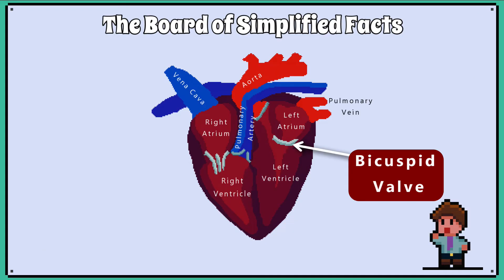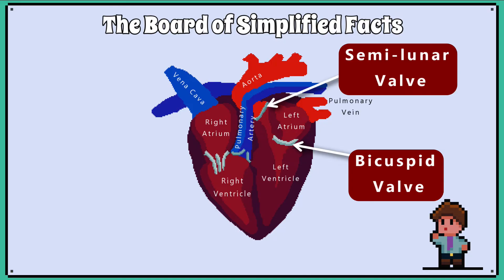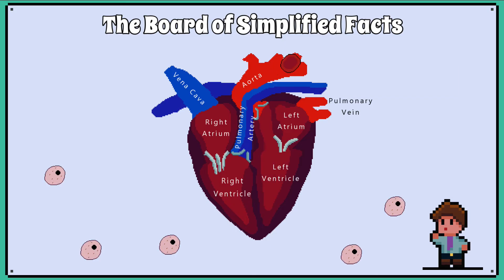When the left ventricle contracts, the blood cannot flow back into the left atrium because the bicuspid valve flaps close shut, preventing backflow. The same is true of the semilunar valve in the aorta — it will flap shut as well if any blood tries to flow back into the left ventricle.